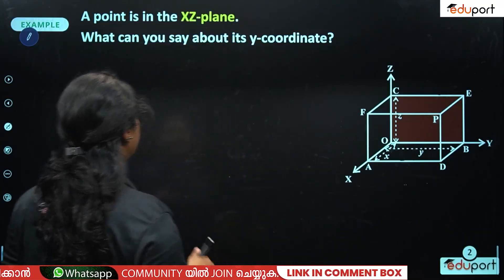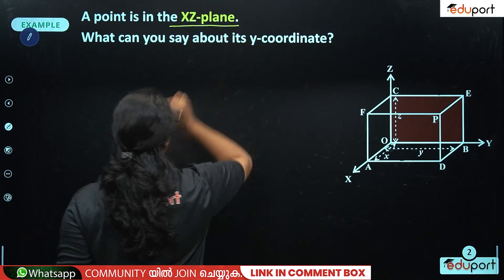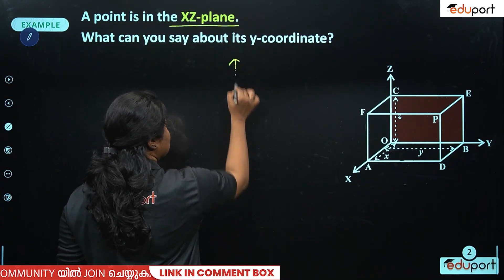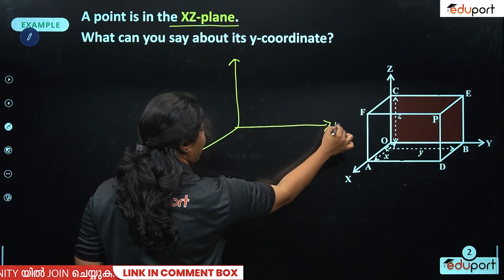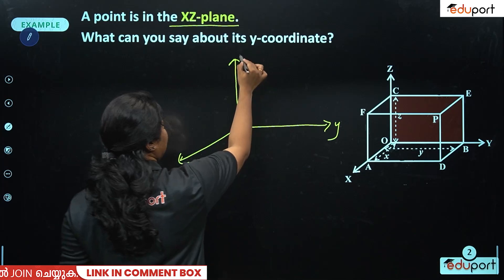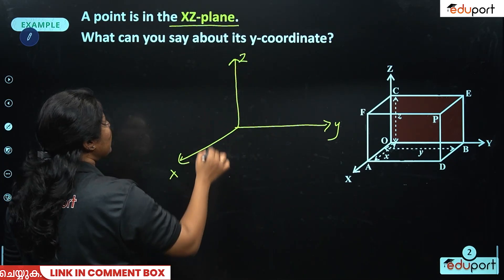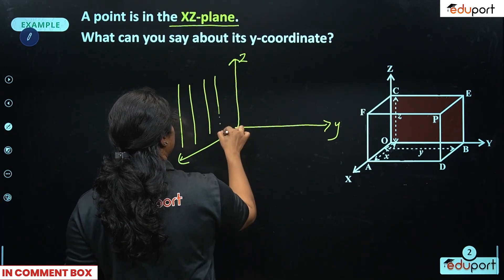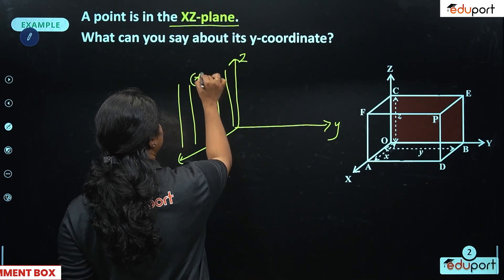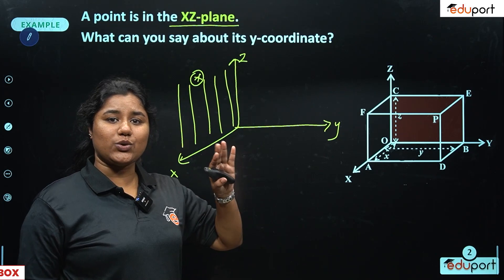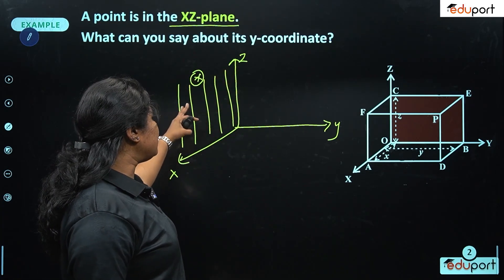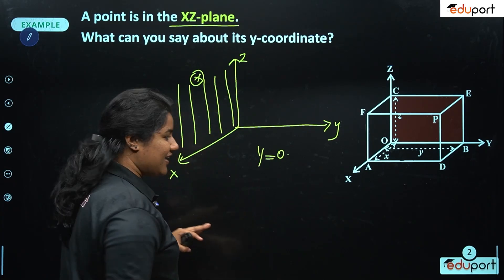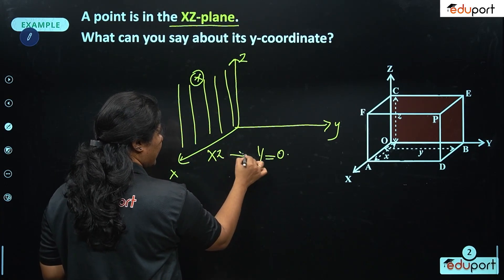Our first question is: the point is in the x-z plane — what can you say about its y-coordinate? We use x, y, z coordinates. If a point is in the x-z plane, we write it in the x-z plane, so the y-coordinate is 0.